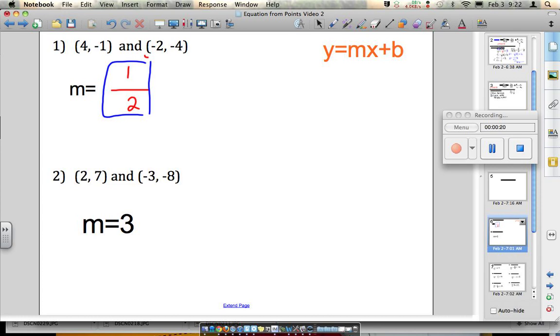So step two is to take the equation and plug in what we know. We know the slope is one half, so I'm going to start my equation and write y equals one half x plus b.